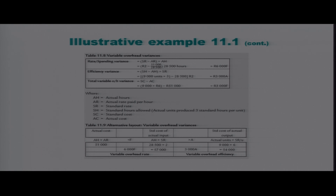Remember we compare at the same level. The 28,500 actual variable overhead hours relate to production of 9,000 units, so we calculate standard hours: 9,000 units multiplied by 3 budgeted hours gives 27,000 standard hours. Subtracting the actual hours of 28,500 and multiplying by R2 gives a variance of R3,000, which is unfavorable, because we used 28,500 hours but only budgeted 27,000.